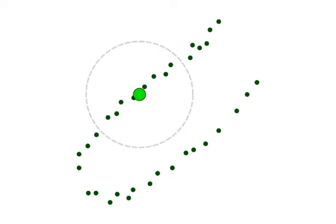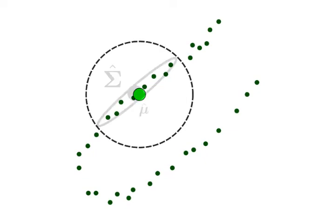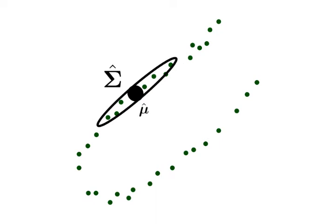Given any query point and a scale parameter, our structure returns a local Gaussian model that represents the statistics of the data points that are close to the query at this given scale.